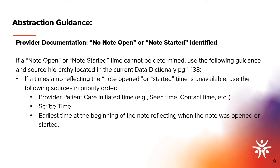If the note open or note started time cannot be determined, use the following sources in priority order per the guidance and source hierarchy in the current data dictionary: first, the provider patient care initiated time, the time seen, or the contact time; second, the scribe time; and third, the earliest time at the beginning of the note reflecting when the note was opened or started.